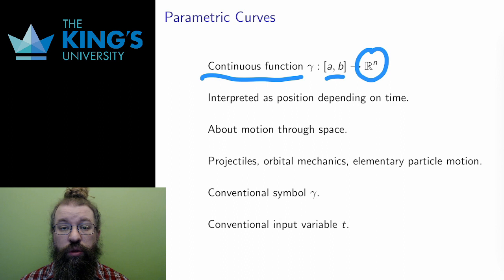It's going to be R^2 and R^3 for the applications that I will talk about in this course. The output of the curve is coordinates of position in some Euclidean space depending on time. As such, parametric curves are used to talk about motion through space.